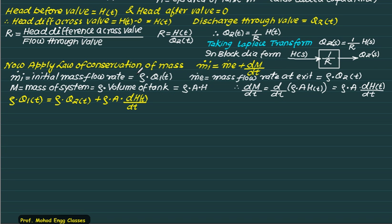So if we apply the law of conservation of mass, M dot I can be written as ρ times Q1(t), M dot E is represented as ρ times Q2(t), and dM/dt will replace ρ multiplied by A into dH(t)/dt. ρ can get cancelled. So we will get Q1(t) equals Q2(t) plus A multiplied by dH(t) divided by dt.